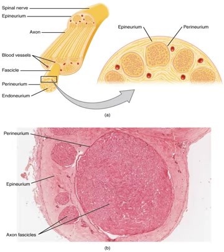Nerves are bundled and often travel along with blood vessels, since the neurons of a nerve have fairly high energy requirements. Within the endoneurium, the individual nerve fibers are surrounded by a low-protein liquid called endoneurial fluid. This acts in a similar way to the cerebrospinal fluid in the central nervous system and constitutes a blood-nerve barrier similar to the blood-brain barrier.